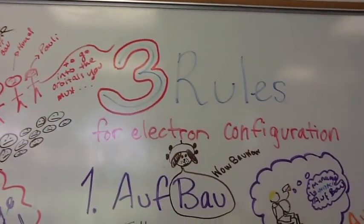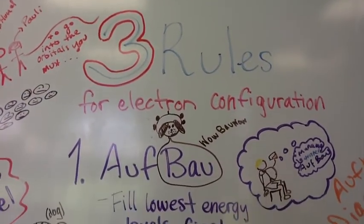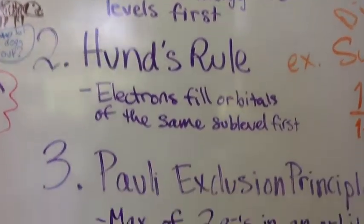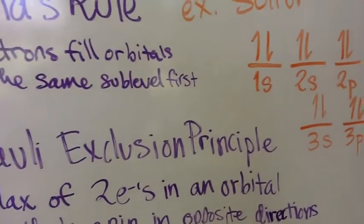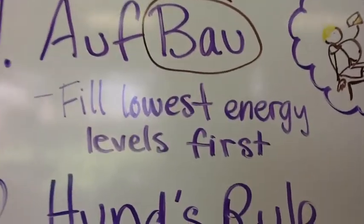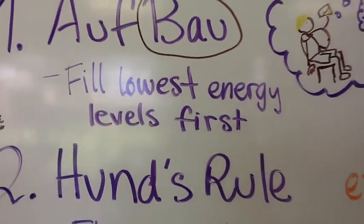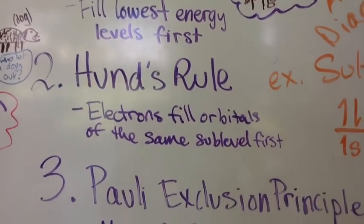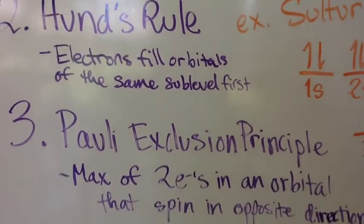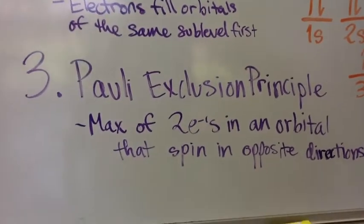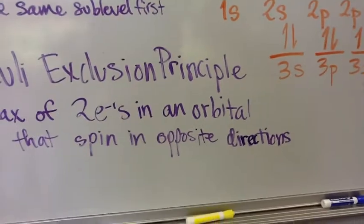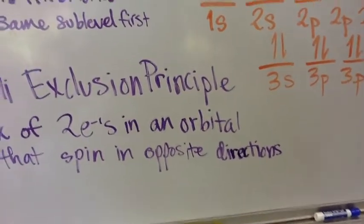There are three rules for electron configuration. The Aufbau principle states that you must fill the lowest energy levels first. Hund's rule says you have to fill orbitals of the same sublevel singly before pairing. And the Pauli exclusion principle says there is a maximum of two electrons in an orbital, spinning in opposite directions.